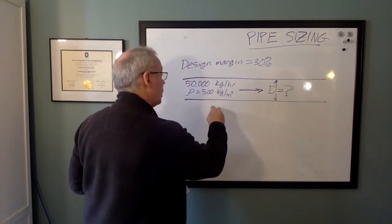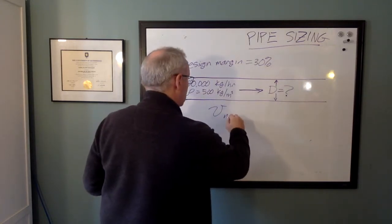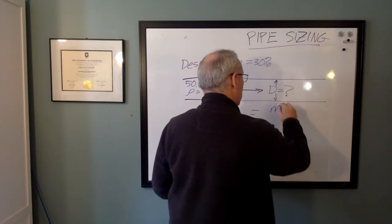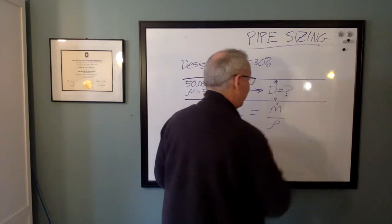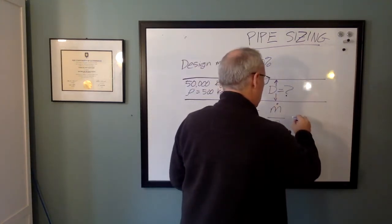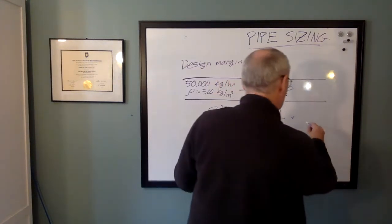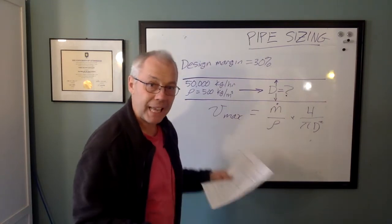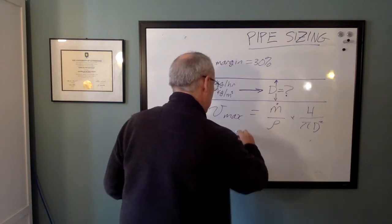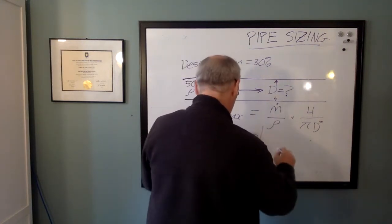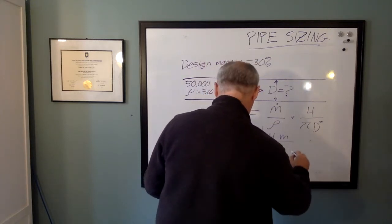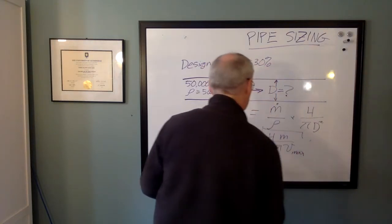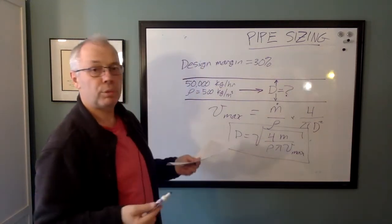So we could say the maximum velocity that we can tolerate is equal to whatever the mass flow is through our pipe. We'll divide that by fluid density so we get a volumetric flow rate. And now we'll divide that by the inside area of the pipe. And that's pi d squared, and we'll stick the four up there. And that's how we get it. And we can write this as an equation for diameter. We can say d is equal to the square root of 4 times mass flow rate over rho pi v max. And there is a perfectly good formula for sizing the pipe.